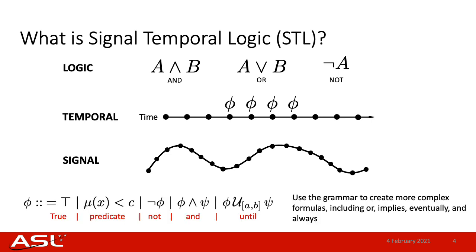At the bottom here is the grammar used to describe the STL language. These operators can be applied on top of each other to create a more complex formula, including ones that we may already be familiar with, such as or, implies, eventually, and always.